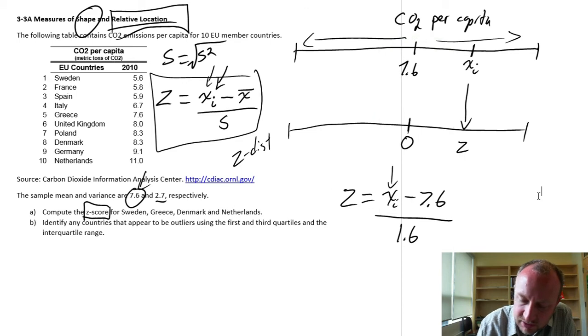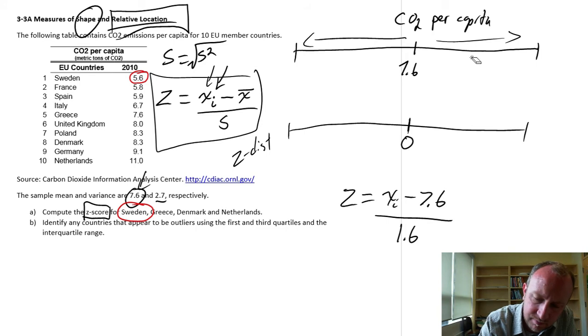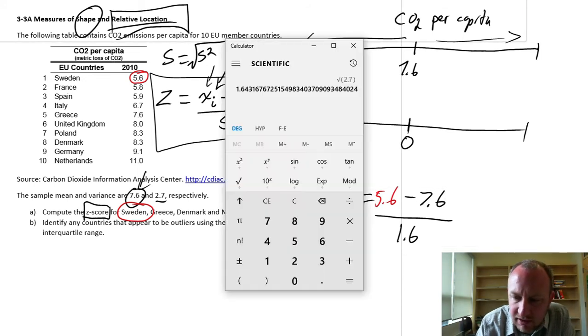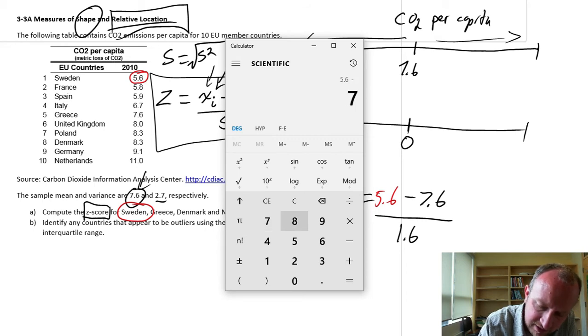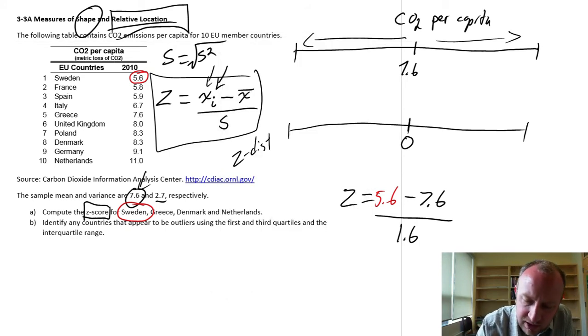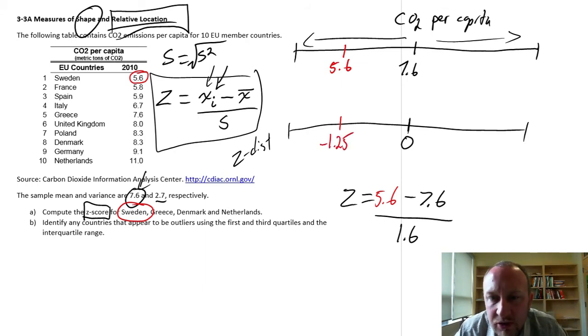And now I can substitute in our values. So let's start with Sweden. Here's our first observation. That's a value of 5.6. So let's substitute in here our value of interest, 5.6. And now we can obtain the z-score. 5.6 minus 7.6 divided by standard deviation 1.6. So negative 1.25. So here's our z-value. Sweden, 5.6, gives us a z-value of negative 1.25. So that observation is 1.25 standard deviations below the mean. I know it's below because it's negative.